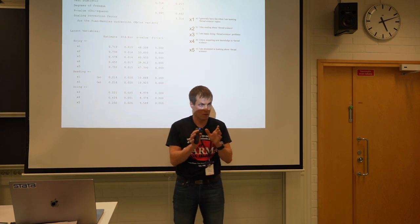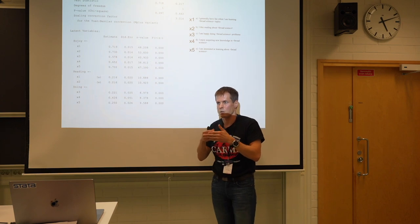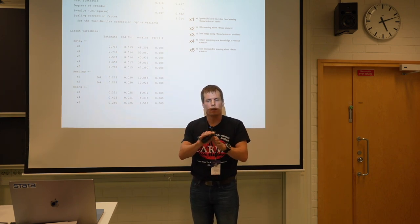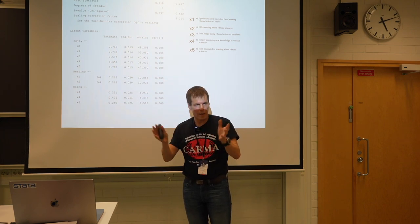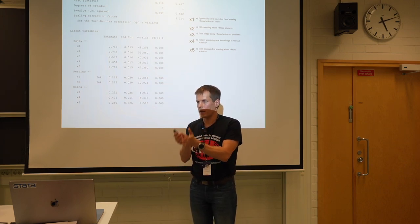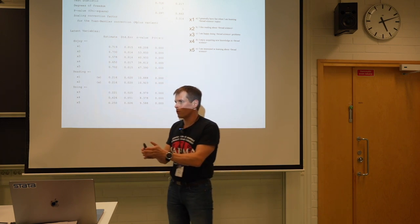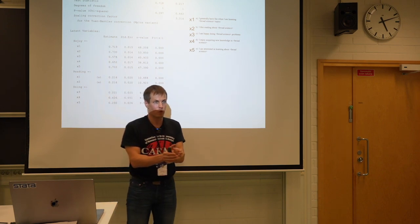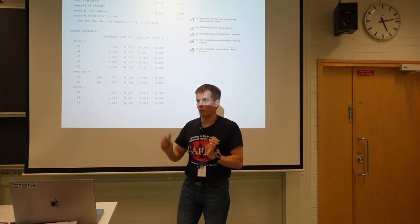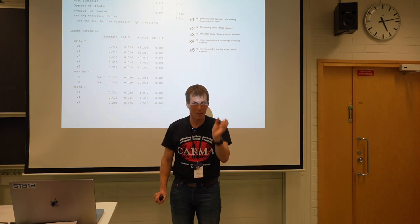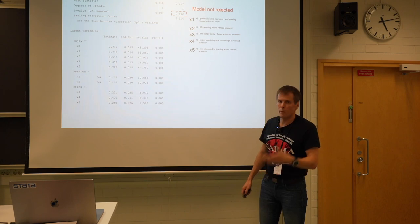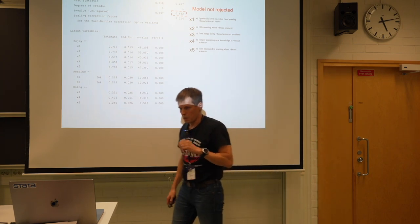When we add the 'doing' factor as well, the model fits well. We have one major factor measuring how much students enjoy science, and students vary in whether their enjoyment is more focused on doing versus reading — those are the minor factors. This is called a bifactor model. Two bathroom scale measurements and a self-reported weight: the two scale measures are more highly correlated because they share the method of measurement in addition to measuring the same thing.